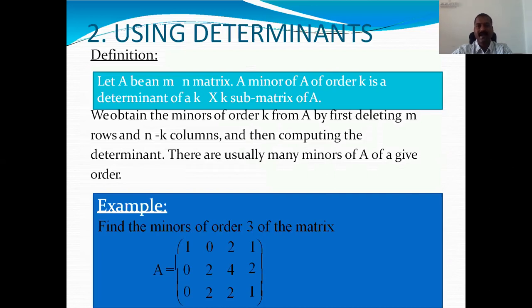How do we compute rank through determinants? Let A be a general M by N matrix. We take a minor of order k and calculate the determinant of that k by k sub-matrix of A. If the determinant is not equal to 0, then rank of A equals k. If the determinant equals 0, then rank of A is less than or equal to k, so we go for a lower-order minor, evaluate its determinant, and so on. The evaluation of rank depends upon evaluating the determinants of the minors.